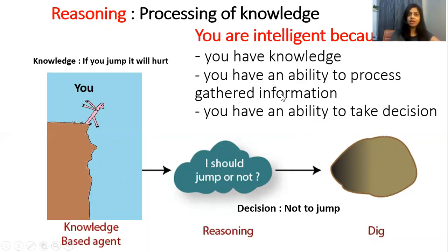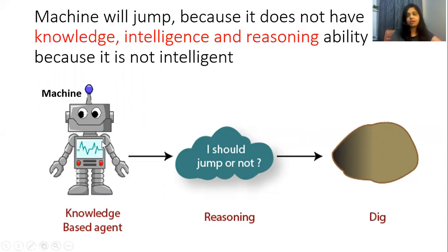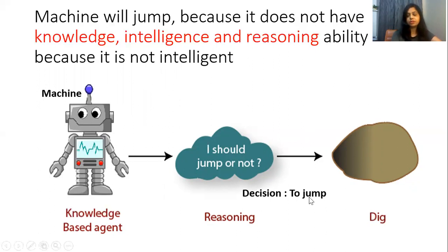You are intelligent because you have knowledge, you have the ability to process gathered information, and you have the ability to take decisions. Reasoning is the processing of knowledge for taking decisions. Now, in the same example, if we replace you with a machine — a machine does not have any knowledge, intelligence, or reasoning ability. So it does not know that if it jumps it will hurt, and the machine will take a decision to jump.